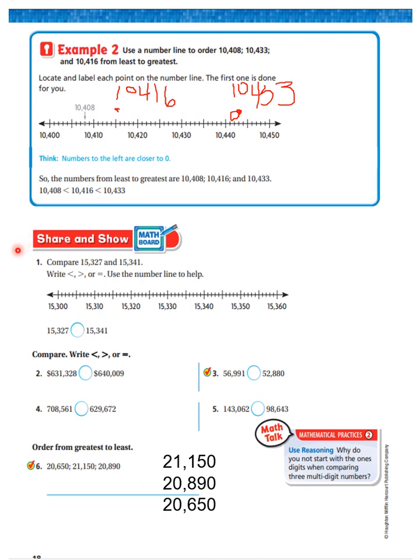Let's look at the next one. It says compare 15,327 and 15,341. 15,327. Here's 15,320, 15,330. In the middle is 15,325. So 15,327 would be right here. And then it's asking us to find 15,341. That would be right here. I'm going to put the dot there. So 15,327 is less than 15,341.